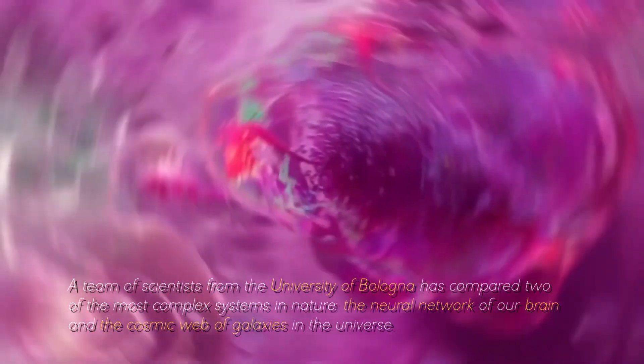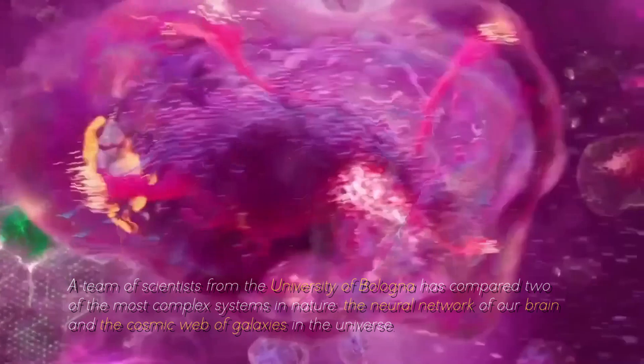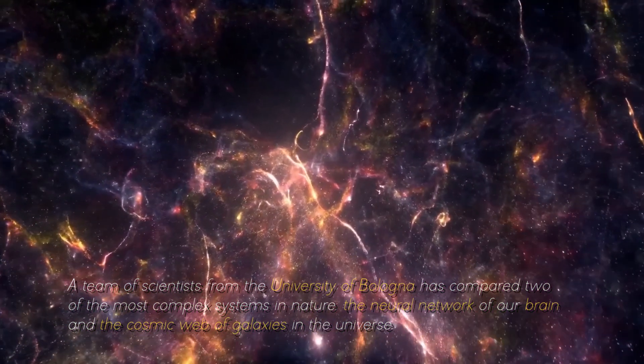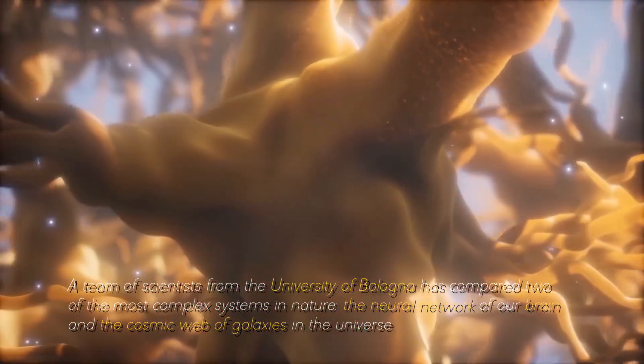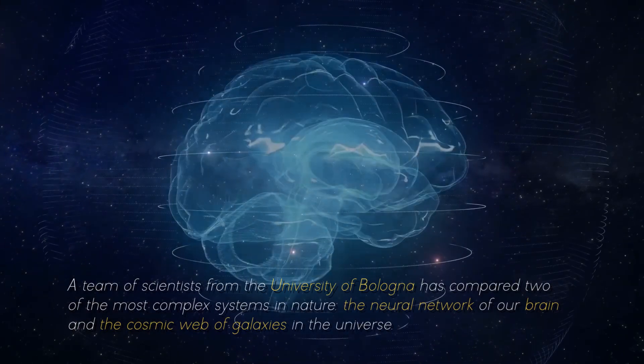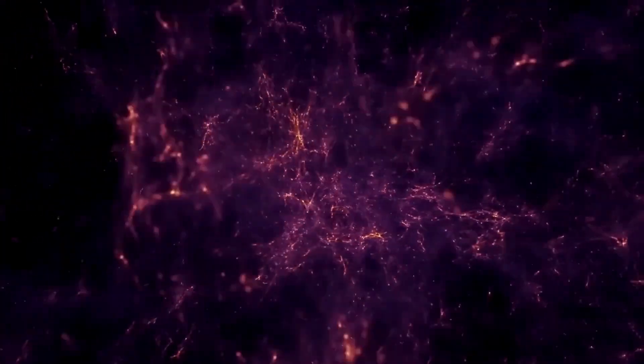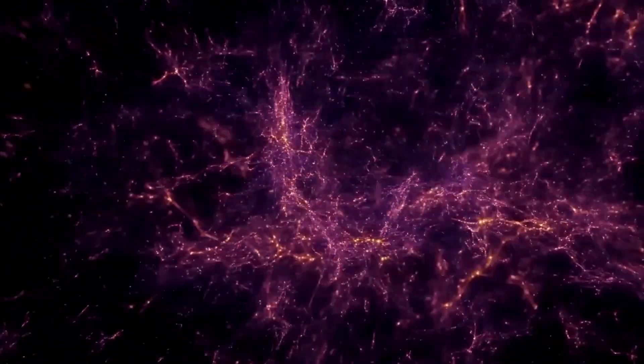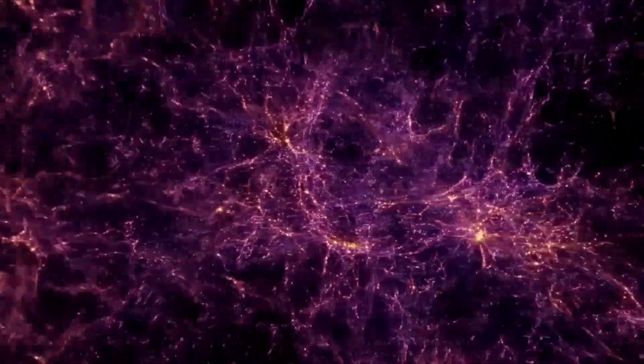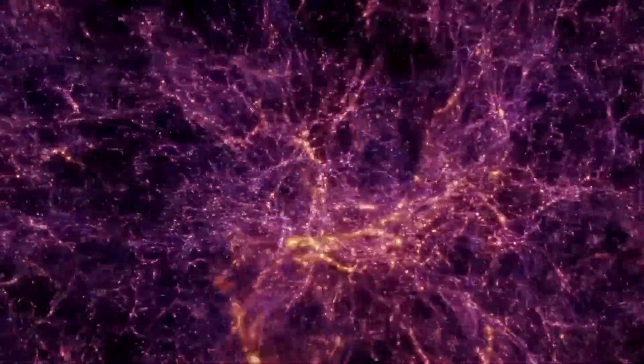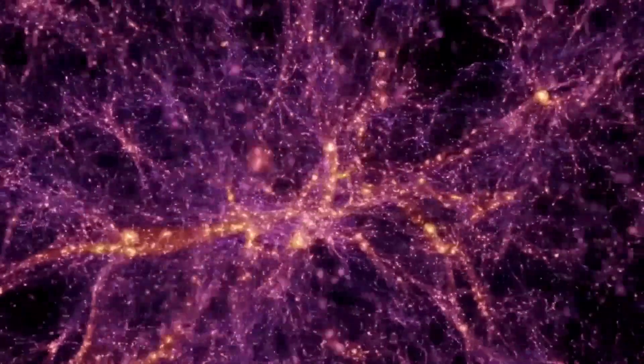A team of scientists from the University of Bologna has compared two of the most complex systems in nature, the neural network of our brain and the cosmic web of galaxies in the universe. What did they discover? That they are incredibly similar. And not just as they look if we compare a human neuron with a cluster of galaxies. There's more.